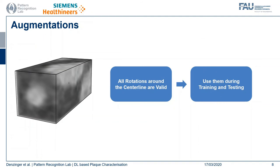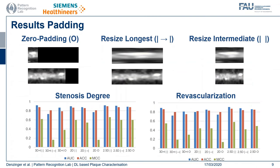Also, I want to mention a convenient property of the task at hand: since all rotations around the centerline are valid, we can use them during training and also during testing. For the results of the three different padding methods, we can see that resizing all lesions to an intermediate size performs best for all three approaches.